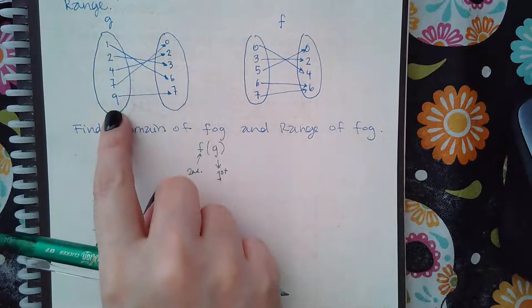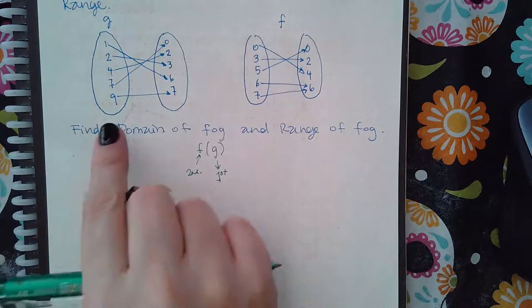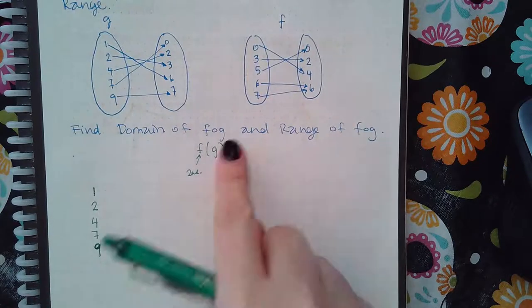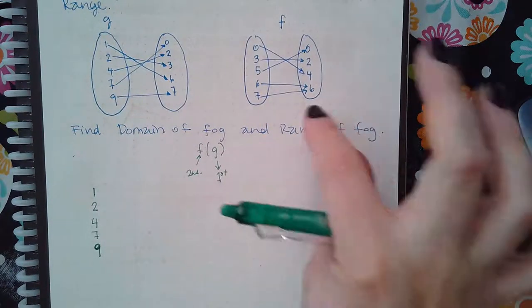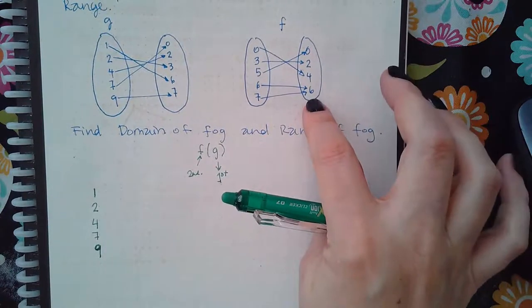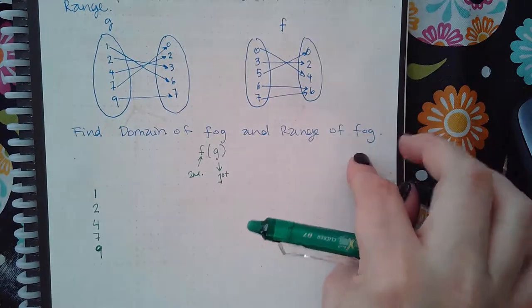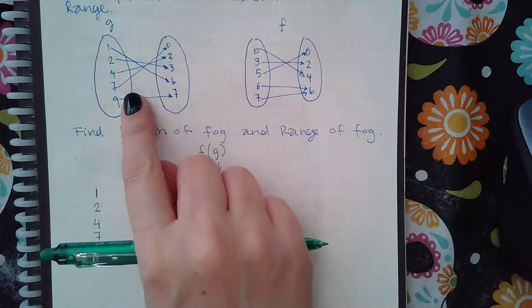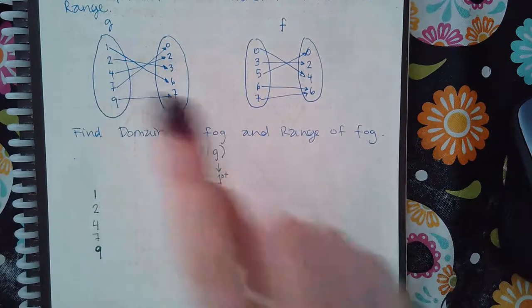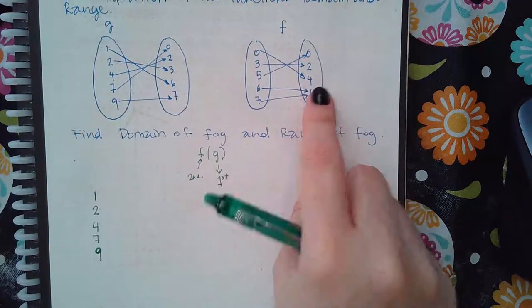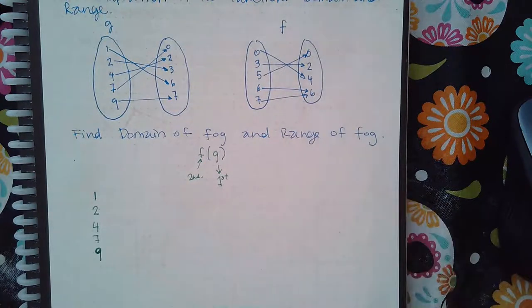But I know that everything in the g domain is a possible domain of f of g, and everything that's in the range of f is a possible range value for f of g. It doesn't mean that that's the domain of f of g and this is the range of g, it just means that that's the possibilities.